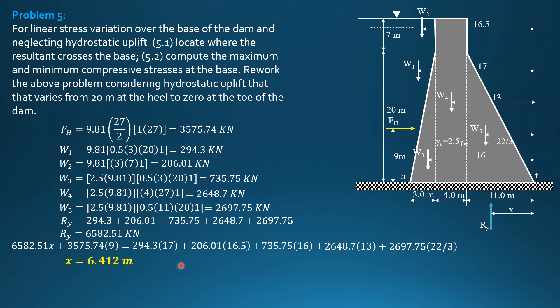Plus weight 4, 2648.7 times 13 plus weight 5, 2697.75 times 22 over 3. Solving for X, X is 6.412 meters from the toe.